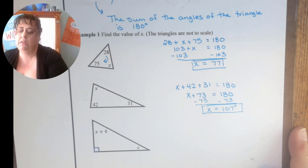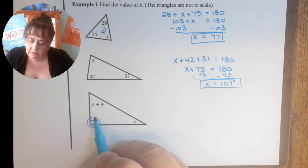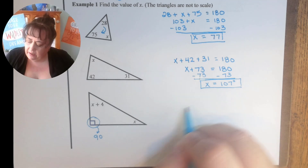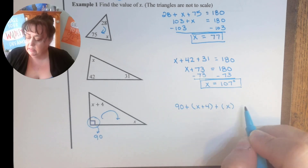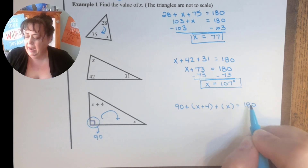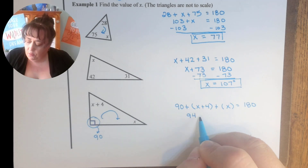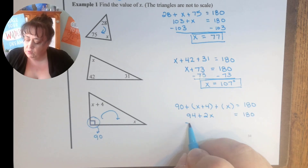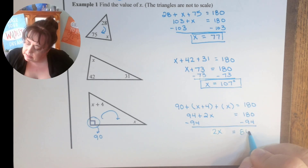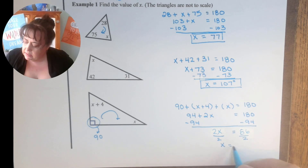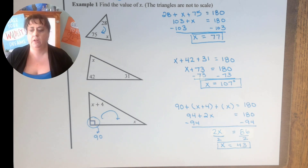This last one is different, but not really. I'm still going to add the three angles up. This one is 90, so we'll start there and go around: 90 plus (x + 4) plus x equals 180. Now collect like terms: 90 and 4 is 94, and x plus x is 2x. Subtract 94 from both sides: 2x equals 86. Divide by 2: x equals 43. We're just solving equations — we just now have a context for solving equations.